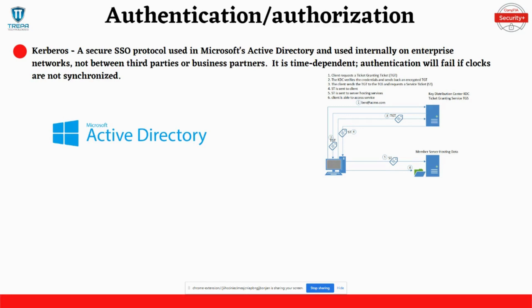Looking at the diagram, the client requests a ticket-granting ticket from the key distribution center. The KDC verifies credentials and sends back an encrypted ticket-granting ticket to the user. The client then sends the ticket-granting ticket to the ticket-granting service and requests a service ticket, back to the KDC.